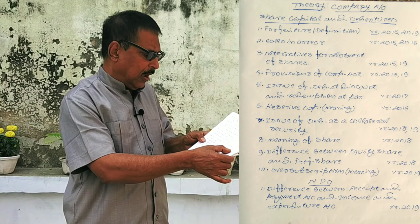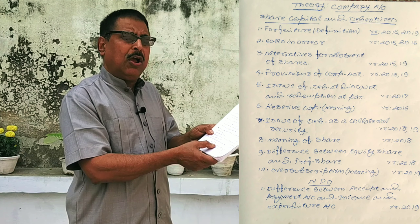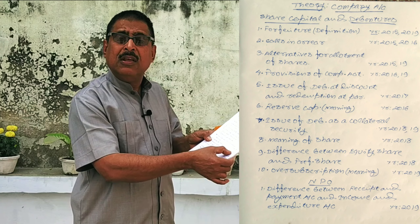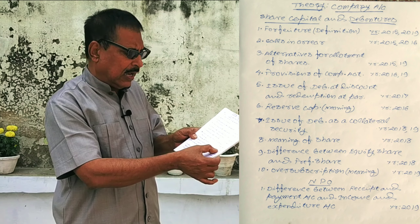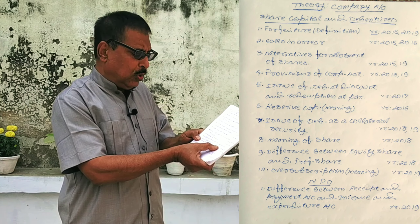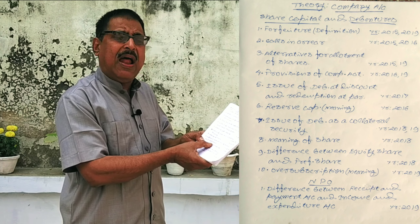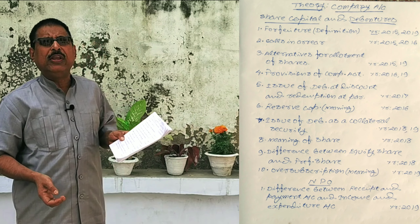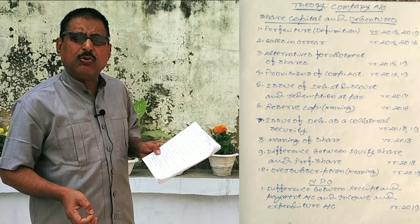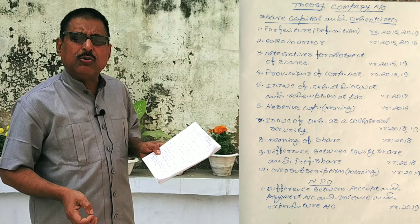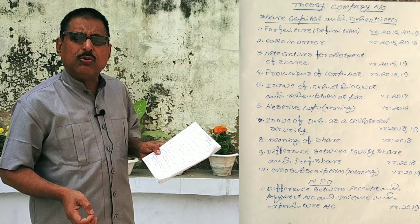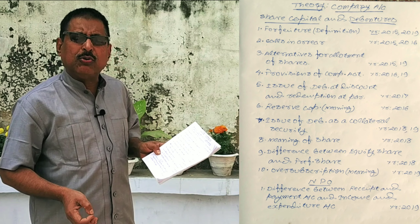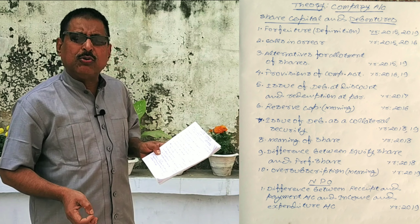Alternatives for allotment of shares — that means how many ways shares are allotted and what choices a company has. This has been asked in 2015 and 2019. Provisions of the Companies Act 2013 are relevant here, and this topic was also asked in 2016 and 2019.